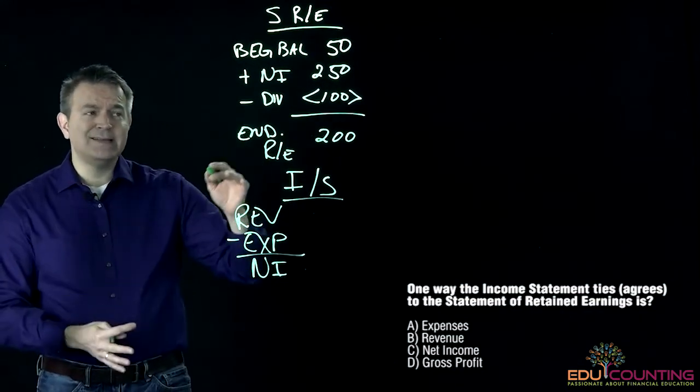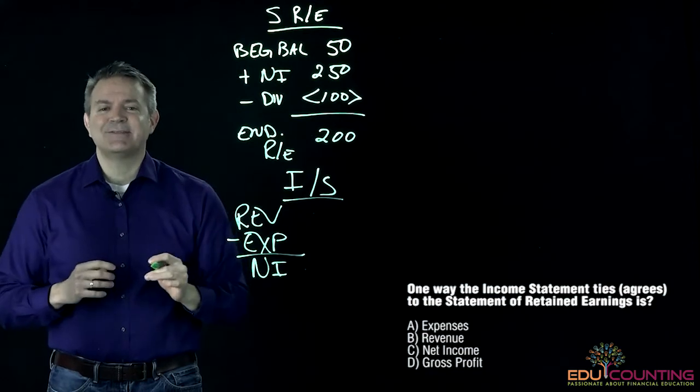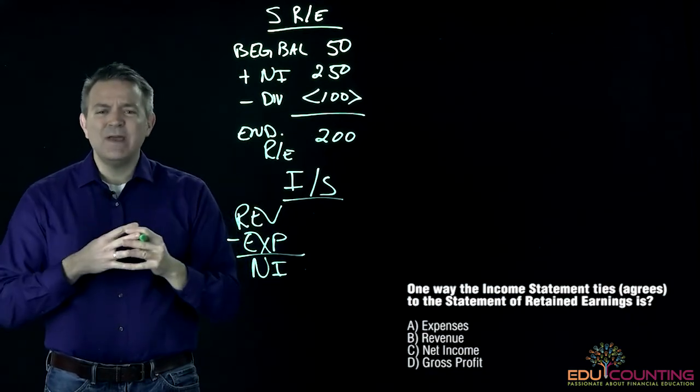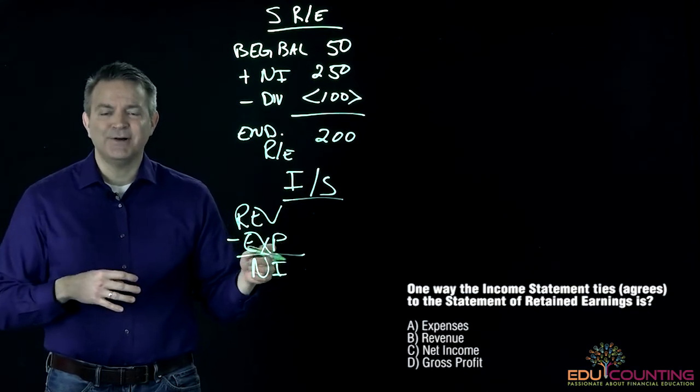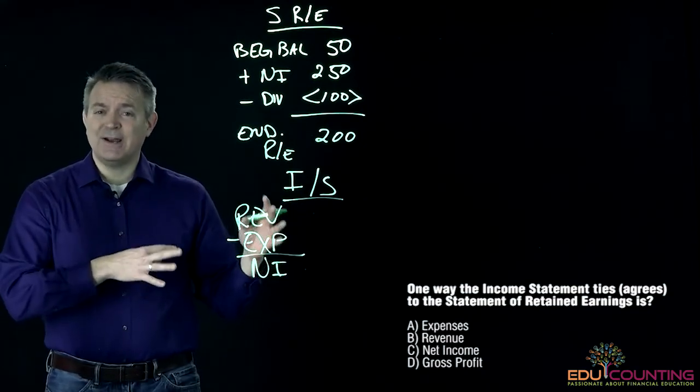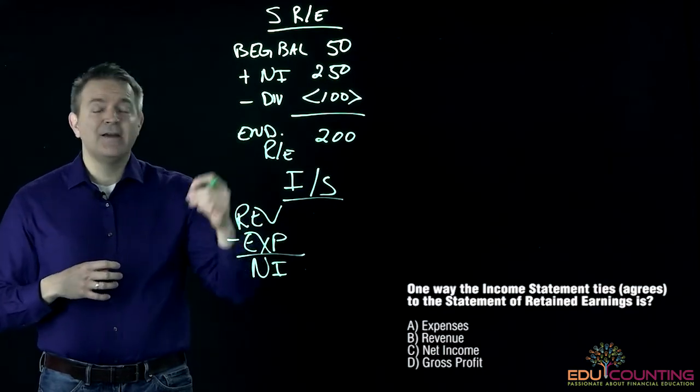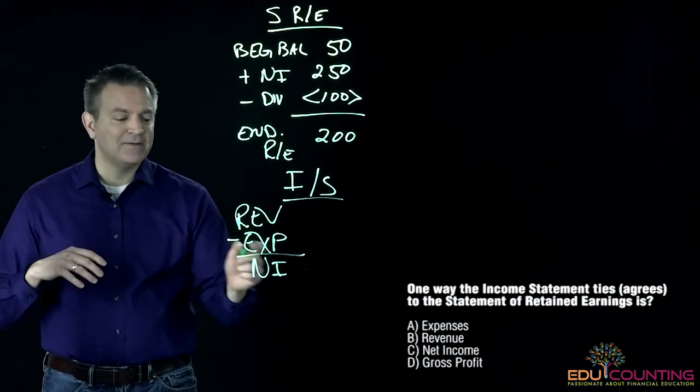If we're trying to tie these two together, the individual financial statements actually interweave with one another. Stuff on the balance sheet agrees with the statement of cash flows. Then we look at the income statement and we're going to do some stuff in order to get on the statement of cash flows. From the income statement to the statement of retained earnings, we're going to see that something agrees here as well.